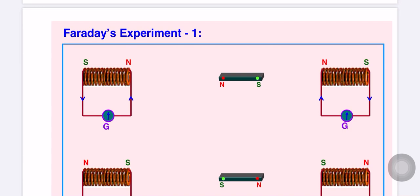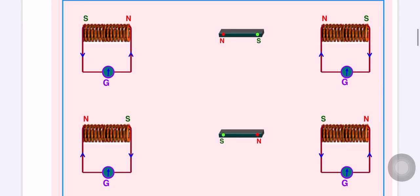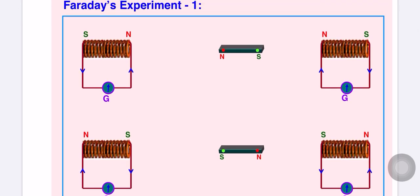We are studying the chapter on electromagnetic induction. In the previous topic we covered magnetic flux, and now we are going to start Faraday's experiment. In Experiment 1, a bar magnet represented by north and south poles is taken, and a coil connected with a galvanometer is kept nearby.